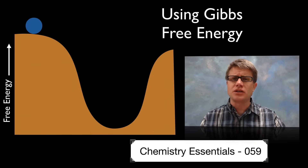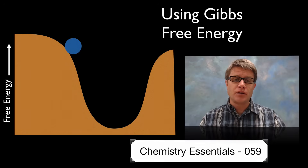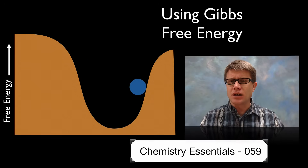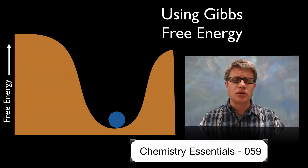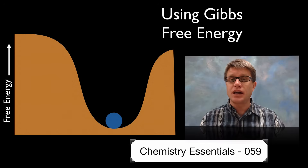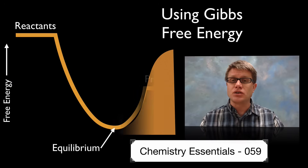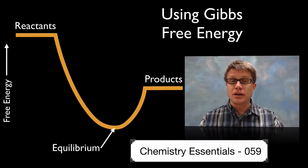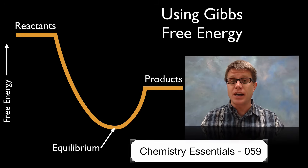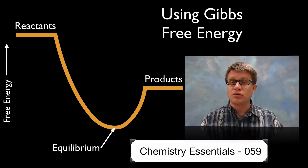Gibbs free energy is essentially energy that's available to do work. If I were to push this sphere, it's going to move down and back. That would be gravitational potential energy being converted to kinetic energy, eventually coming to rest at the bottom. As an analogy, this explains what's going on in a chemical or physical process — reactants moving towards products, spontaneously moving back, eventually reaching equilibrium. At that point, Gibbs free energy has gone to zero.